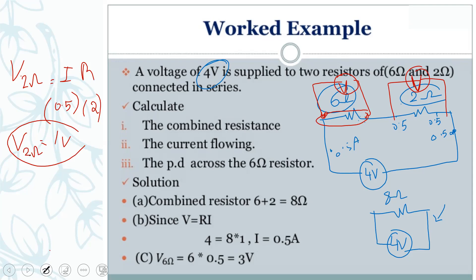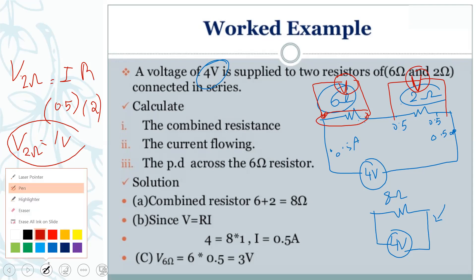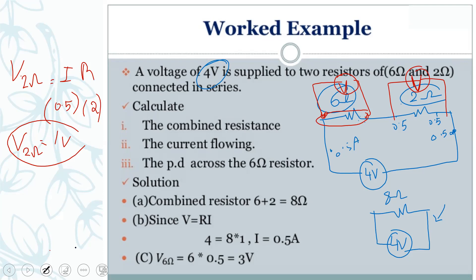Now look: the voltage on the six-ohm is three volts, and the voltage on the two-ohm is one volt. When you add them, you get four volts — which is the total supply voltage of the circuit.